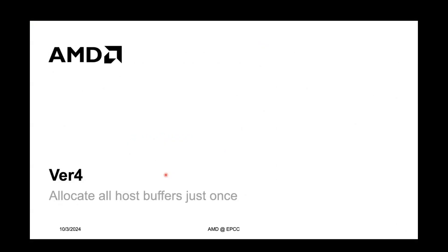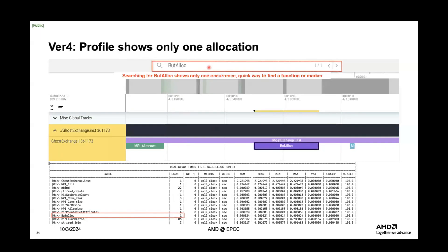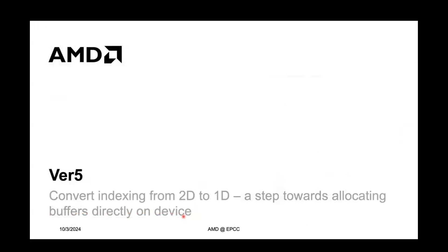Performance doesn't improve from this change alone, so we next think about how to avoid OS-managed address translations and use a different allocator. But first, we need to change the indexing mechanism from 2D to 1D — that's done in version five. We don't expect performance difference from this change. But there's a useful Perfetto feature to highlight: if you click on any item and press M on your keyboard, it shows the duration outline for that call and puts a vertical line through the entire profile, so you can see what other activity was happening simultaneously across all rows. This is especially useful when you have multiple streams with kernels launched to the GPU.